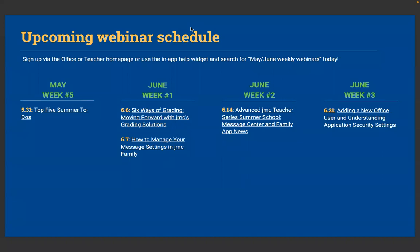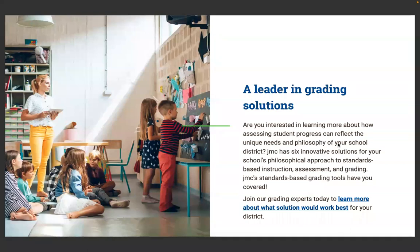Looking ahead at upcoming webinars: the Top Five Summer To-Do's for those preparing for online registration; finishing the Six Ways of Grading series with 'Moving Forward with JMC's Grading Solutions' next week; How to Manage Your Message Settings in JMC Family also next week; moving through June with an Advanced JMC Teacher Summer Series covering Message Center and Family App news; and Adding a New Office User and Understanding Application Security Settings. Check out our YouTube channel for the full Six Ways of Grading series covering all options for standards-based grading, assessment, and traditional course letter grades.